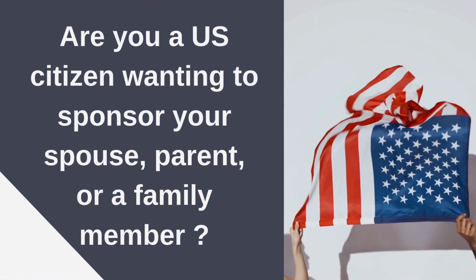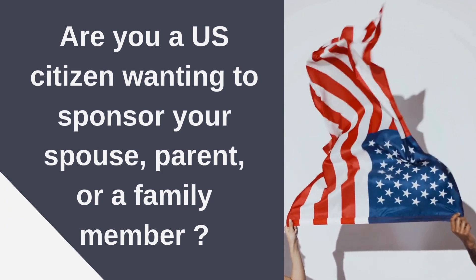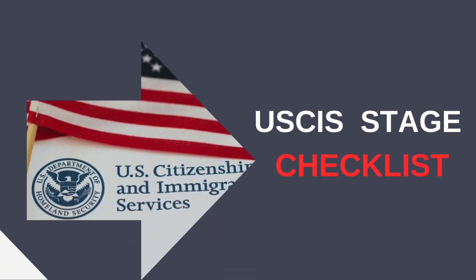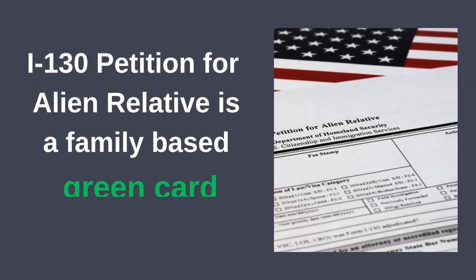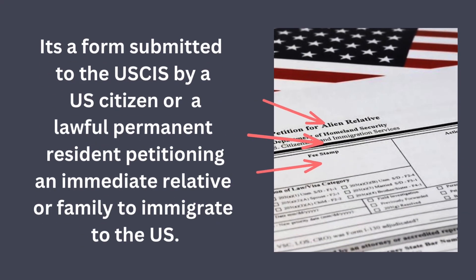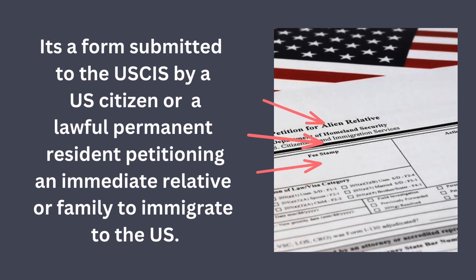Are you a US citizen wanting to sponsor your spouse, parent, or a family member? The I-130 Petition for Alien Relatives is the first step for you. In this video, we'll break down the USCIS Stage Checklist, making clear the process for both the petitioner and the beneficiary. I-130, officially called Petition for Alien Relatives, is the first step for a family-based green card process. It's a form submitted to USCIS by a US citizen or a lawful permanent resident petitioning for an immediate relative or family member to immigrate to the United States.